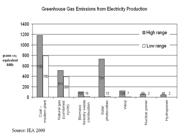Overall, food accounts for the largest share of consumption-based GHG emissions with nearly 20% of the global carbon footprint, followed by housing, mobility, services, manufactured products, and construction. Food and services are more significant in poor countries, while mobility and manufactured goods are more significant in rich countries.